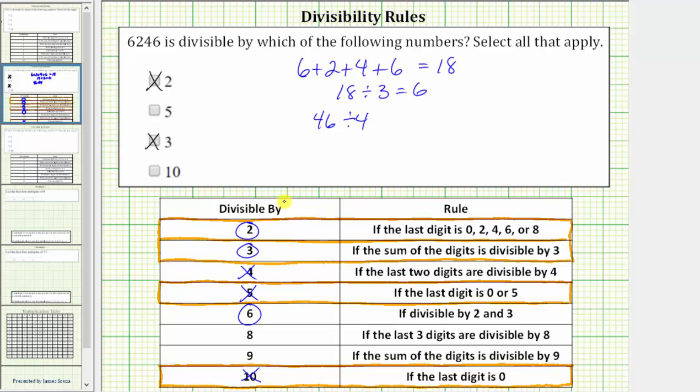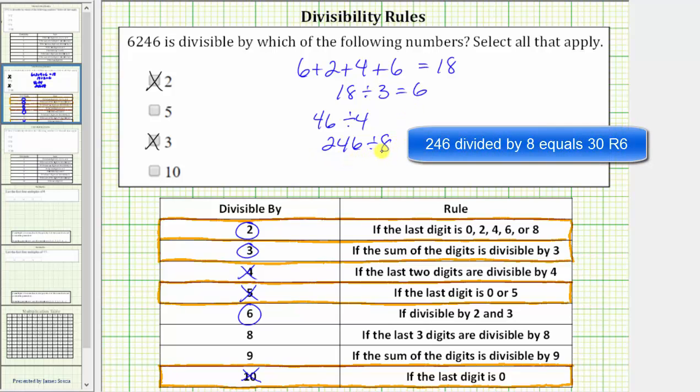A number is divisible by 8 if the last three digits are divisible by 8. The last three digits are 246. 246 is not divisible by 8 because if we divide, we will have a remainder. So we cross off 8.